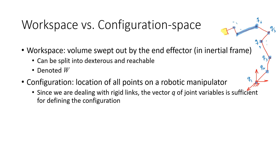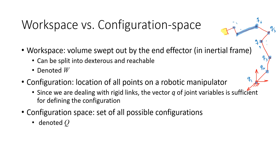Having defined the configuration using the highlighted joints, we can now define the configuration space, which is the set of all possible configurations. This robot may assume numerous different configurations, and all those possible configurations combined are called the configuration space, denoted by capital Q. We define these two concepts because obstacles and tasks are generally defined in the workspace, whereas the robot understands itself in the configuration space. You must be careful about how the task defined in the workspace is mapped onto the configuration space.